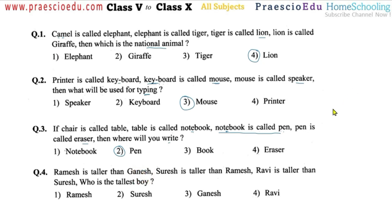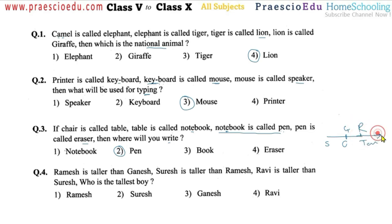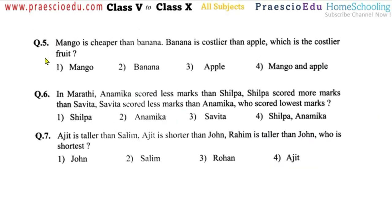Question number four: Ramesh is taller than Ganesh. We are making a comparison from shorter to taller. Ramesh (R) is taller than Ganesh (G). Suresh is taller than Ramesh, so Suresh goes above Ramesh. Ravi is taller than Suresh, so Ravi is placed above Suresh. Who is the tallest boy? Ravi is the tallest, given in option number four.